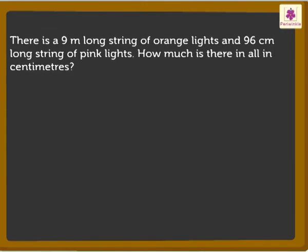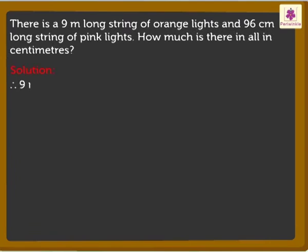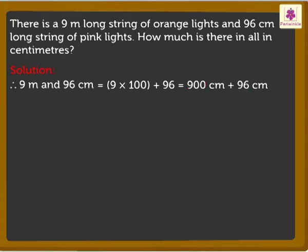Here, we have 9 meters and 96 centimeters. So, 9 meters is equal to 9 into 100 which is equal to 900 centimeters. Now, add 900 plus 96 is equal to 996 centimeters.